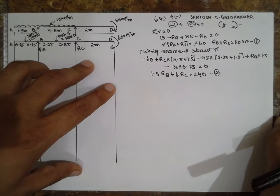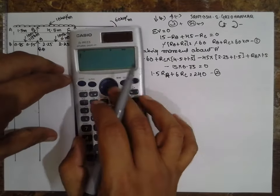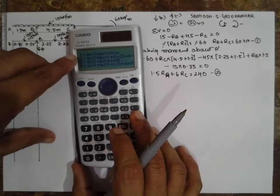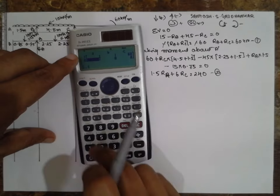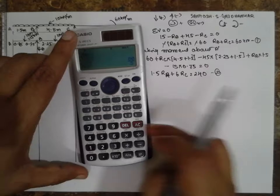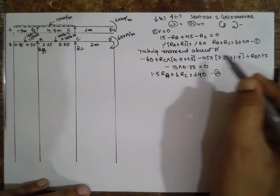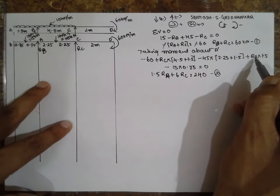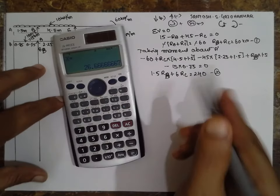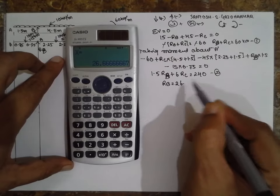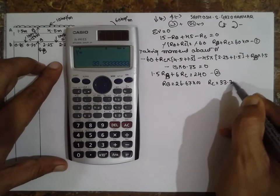Now, with the help of the calculator, entering the first equation: 1, 1, 60; and the second: 1.5, 6, 240. The first value — RA — is 26.67 kN, and RC is 33.33 kN.